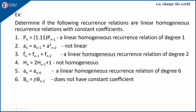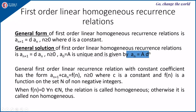It is linear and first order but not with a constant coefficient. Now, for first-order linear homogeneous recurrence relations, the general form is a(n+1) = d·a(n), or equivalently a(n) = d·a(n-1), where the (n+1)th term is obtained from the nth term, with n ≥ 0 and d a constant. The general solution, given a(0) = a and n ≥ 0, has the unique solution a(n) = a·d^n.